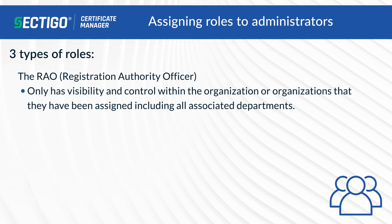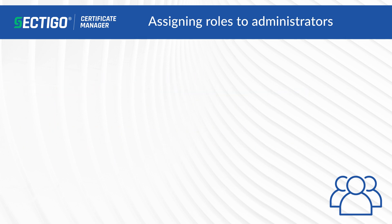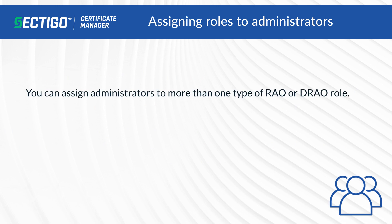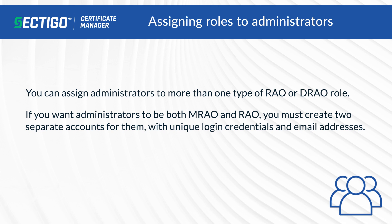The second type is the RAO, or Registration Authority Officer. They only have visibility and control within the organization or organizations assigned to them, including all associated departments. The third is the DRAO, or Department Registration Authority Officer, who only has visibility and control over certificates associated with the specific departments assigned to them. You can assign administrators to more than one RAO or DRAO role.